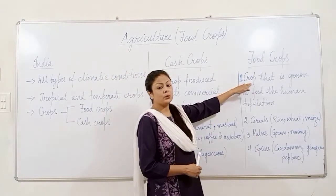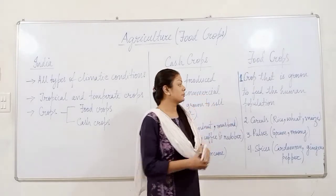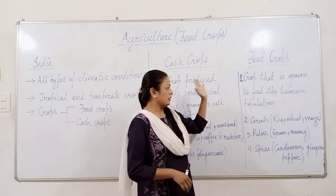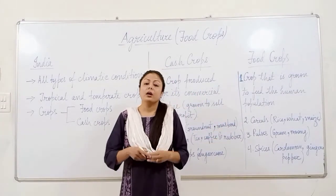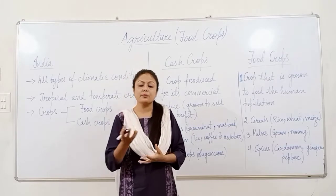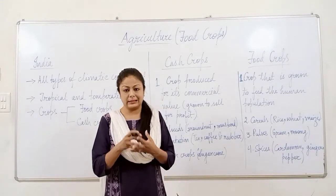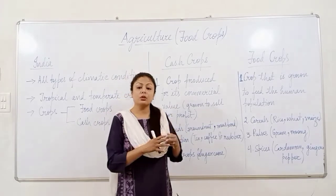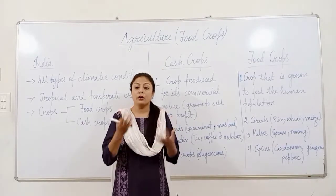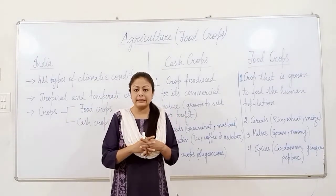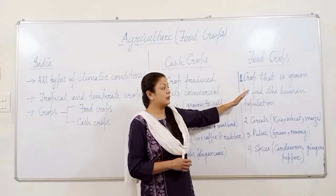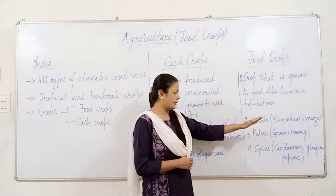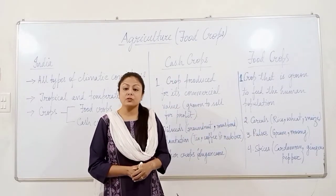The next category is food crops. Food crops are crops grown to feed the human population — the crops that we consume directly so that our hunger is satisfied. Food crops are grown for nutritional value or to feed the population of a place, country, or region. Food crops include cereals such as rice, wheat, maize, and millet.